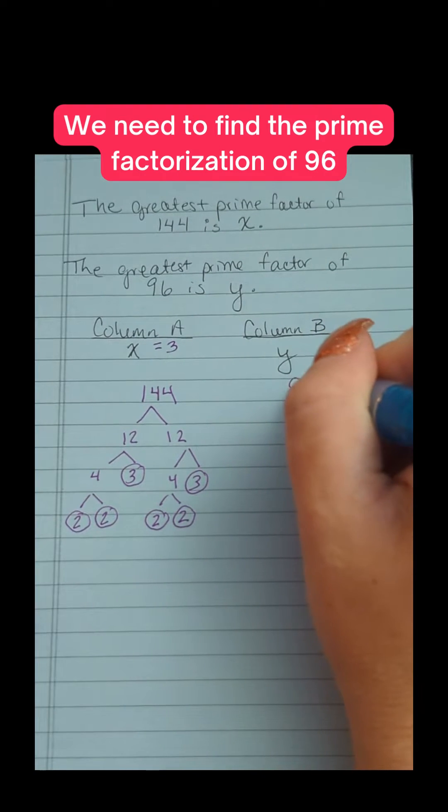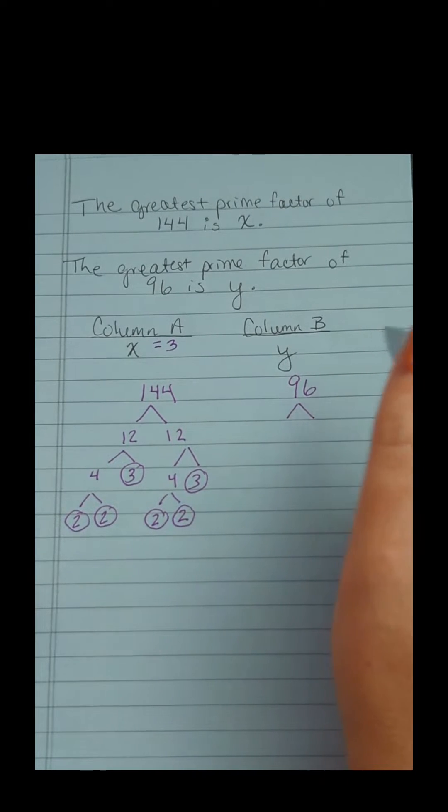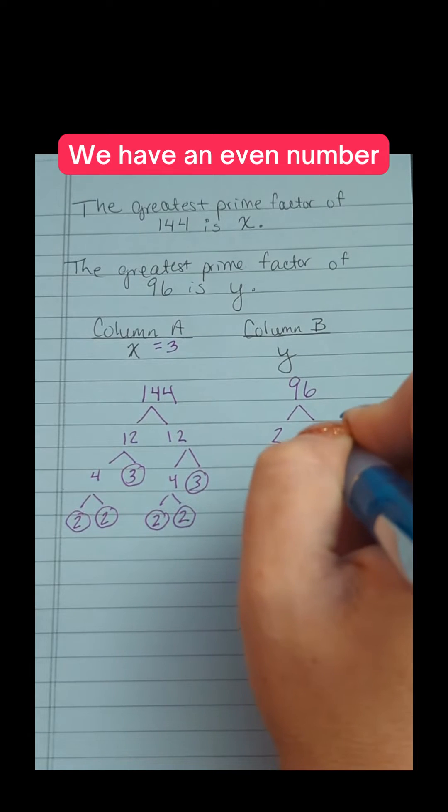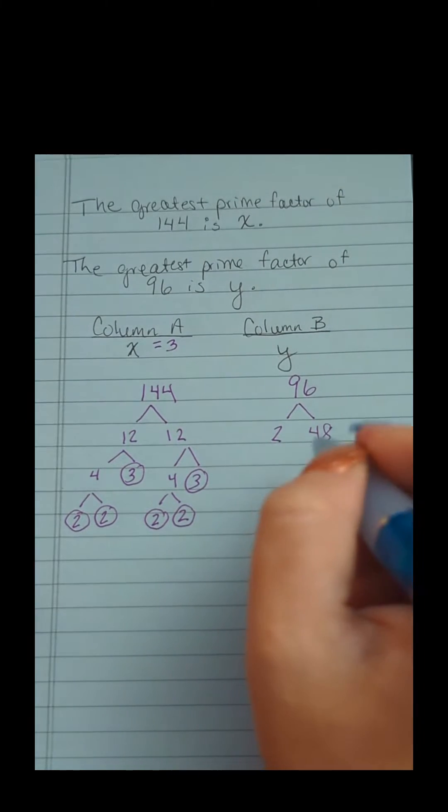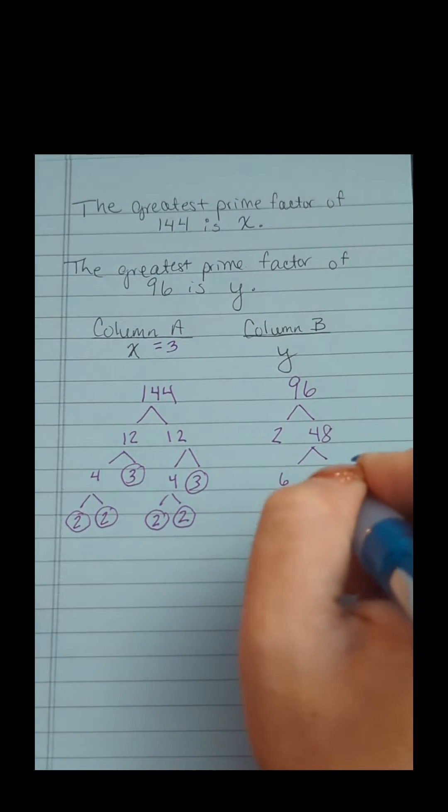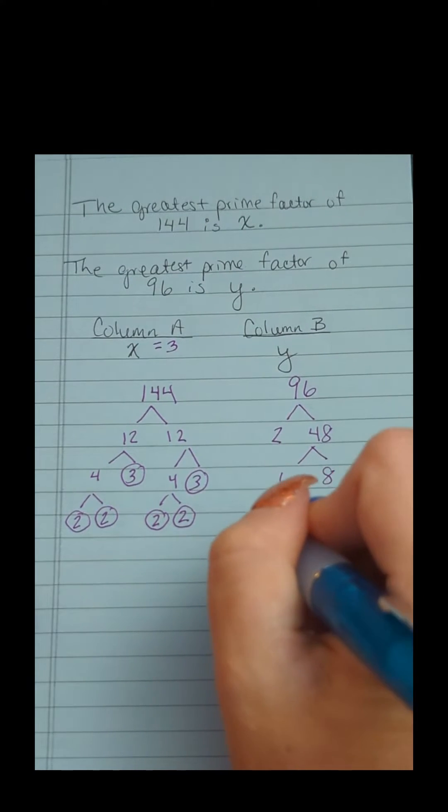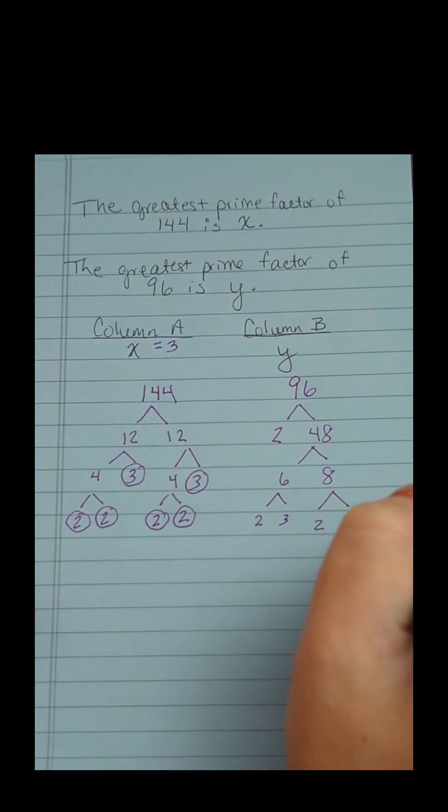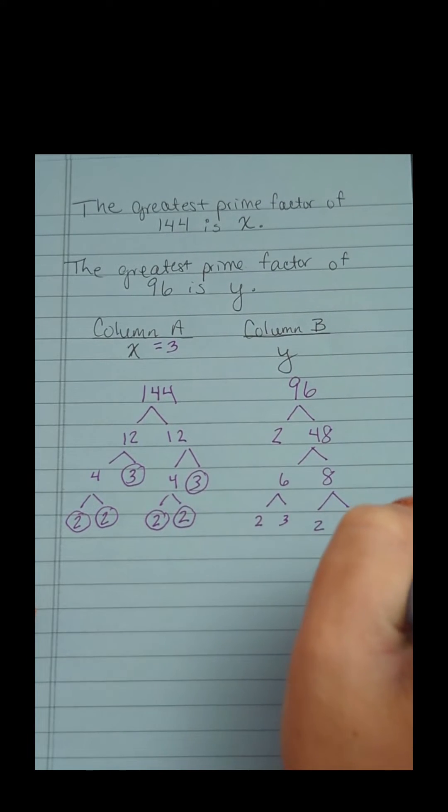We need to find the prime factorization of 96. We can start with any numbers we want, really. I noticed that this is even, so I would start with 2 times 48. 48 is pretty familiar in times tables, that's 6 times 8. So 6 is 2 times 3, and 8 is 2 times 4, and that 4 is 2 times 2.